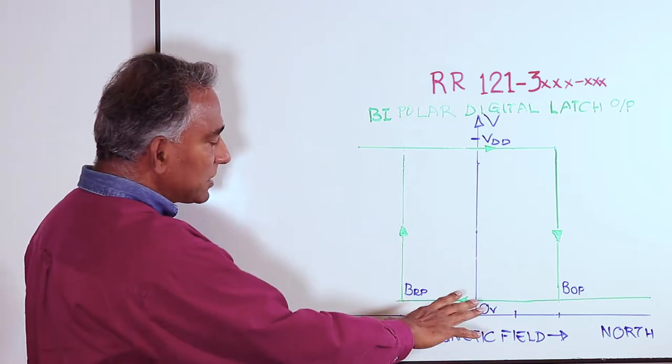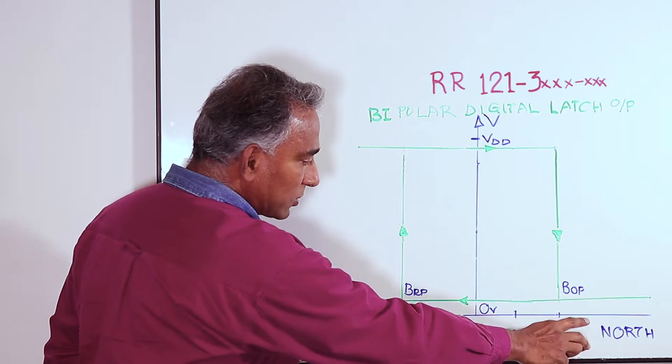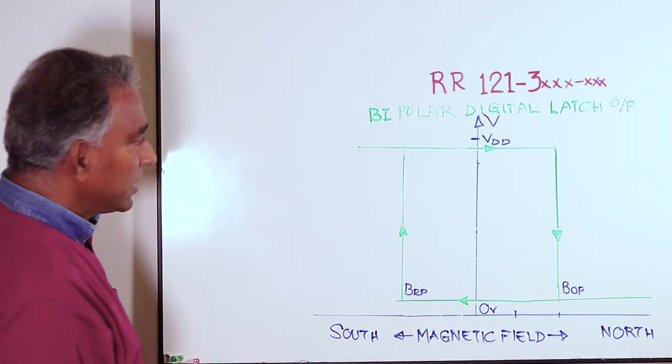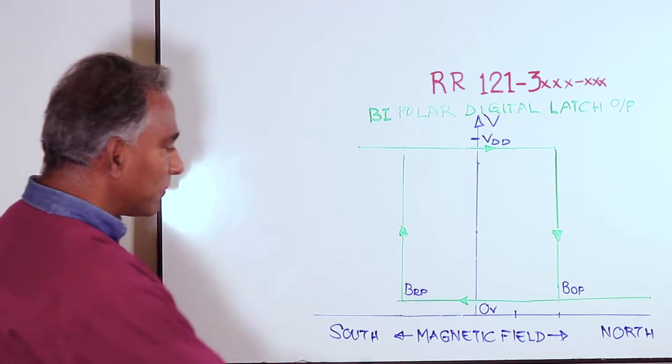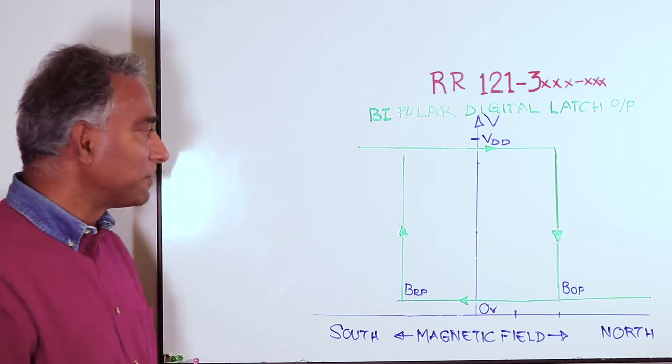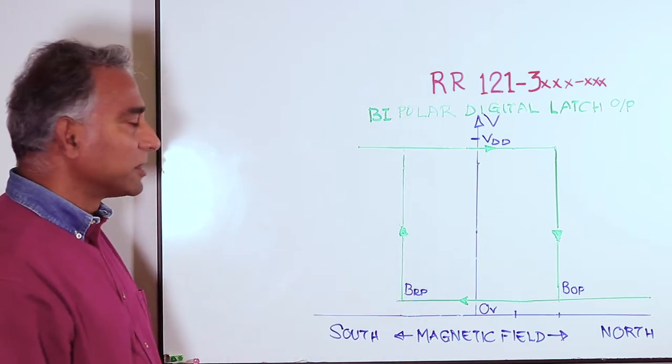So the output of this sensor switches between BOP, which is on the north pole side, and BRP, which is on the south pole side. The hysteresis in this case is the difference between BOP and BRP. This results in a very robust switching of the sensor,